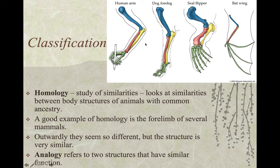We're talking about humans, dogs, seals, and bats. Even though the structure of the hand is about the same, the bat flies with his, the seal swims with his, the dog runs on his toes on a constant basis, and humans can write with their hands.